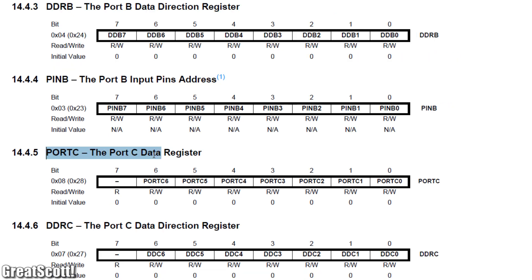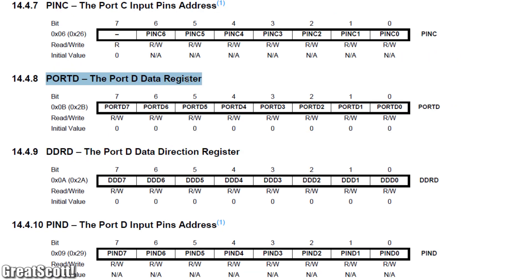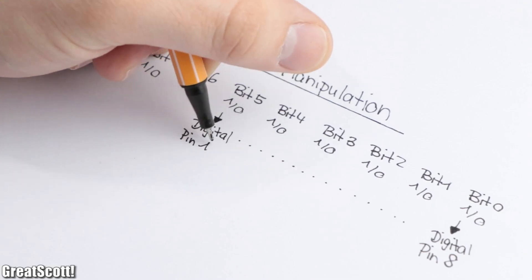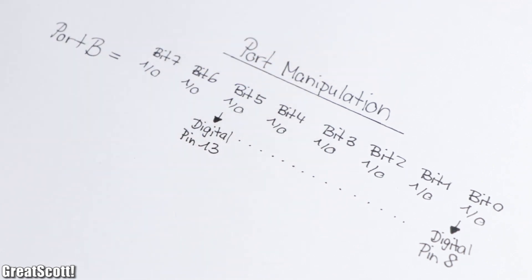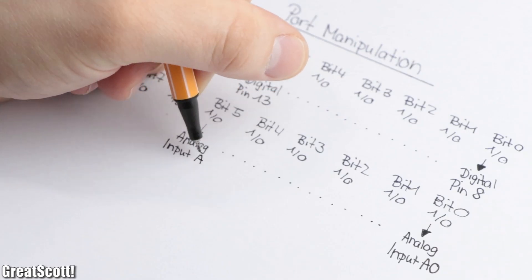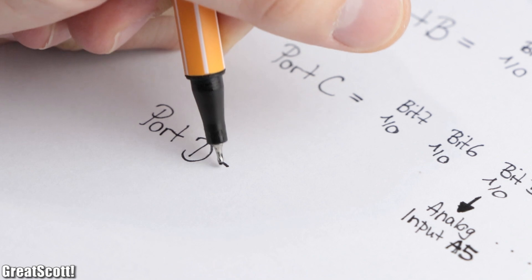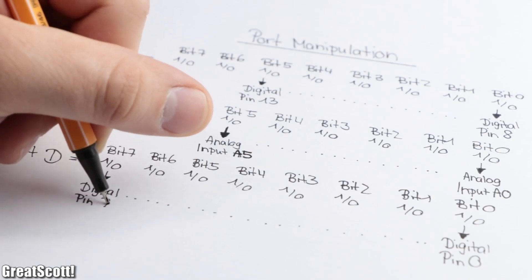In total there exist three of those port registers. Port B which represents digital pin 8 to 13, Port C which is the analog input 0 to 5, and Port D which is the digital pin 0 to 7.